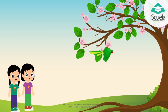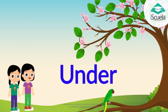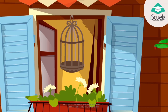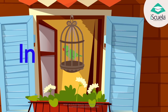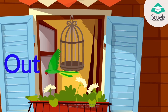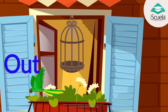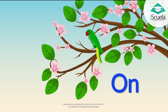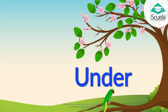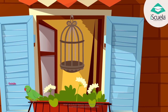Where is the parrot? Under the tree. Where is the parrot? In the cage. Where is the parrot? Out of the cage. On. Under. Inside. Outside.